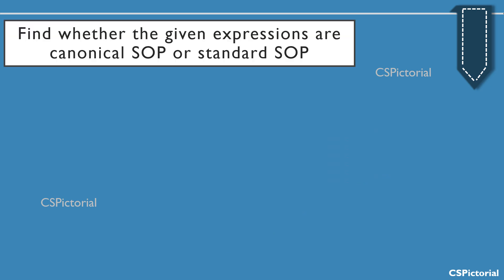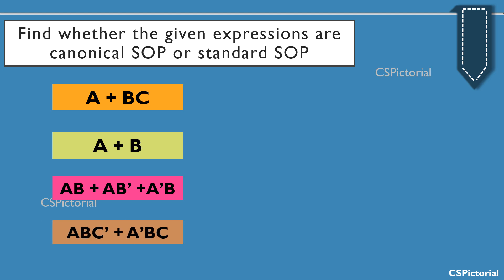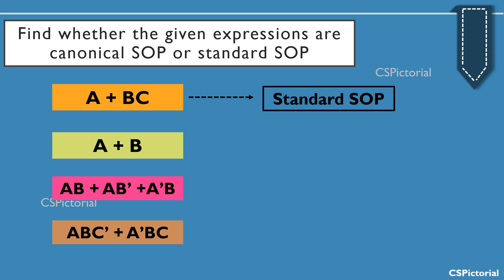Here a few example expressions are given. Let us find whether each is a standard SOP or canonical SOP. Always remember: if each product term has all the literals, it is canonical SOP; a simplified expression is the standard SOP. In the first expression, A + BC, the total literals involved are A, B, and C. But the first term A misses B and C, and the second term BC misses A. So we could conclude that this expression is a simplified standard SOP.